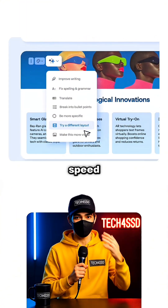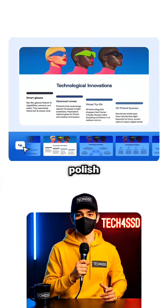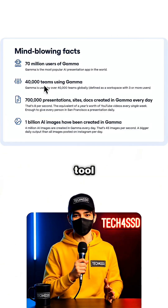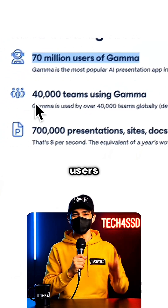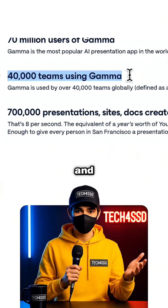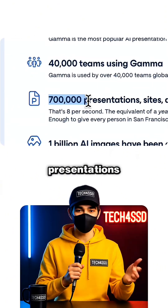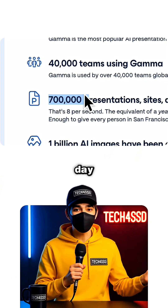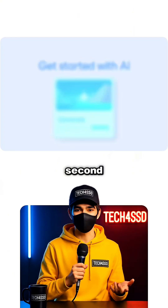Nano Banana gives you the speed and Gamma gives you the polish. And this isn't some tiny tool — Gamma has over 70 million users, 40,000 teams, and creates 700,000 presentations, websites, and docs every single day. That's about eight every second.